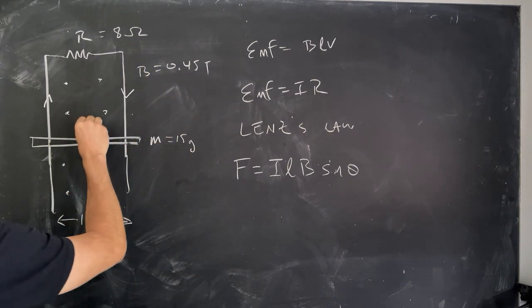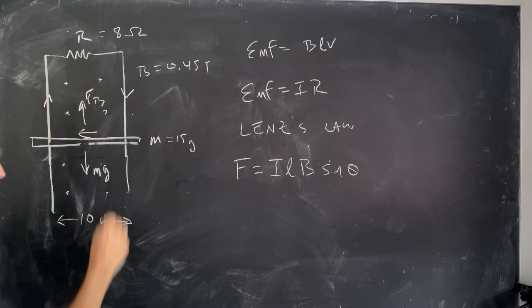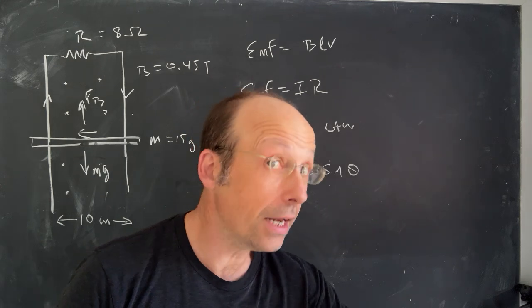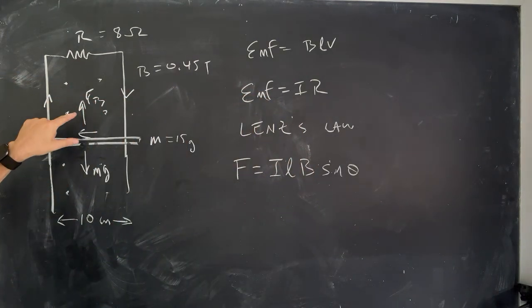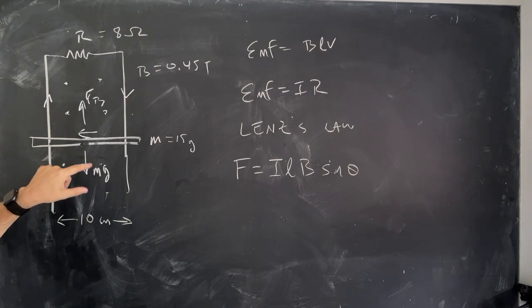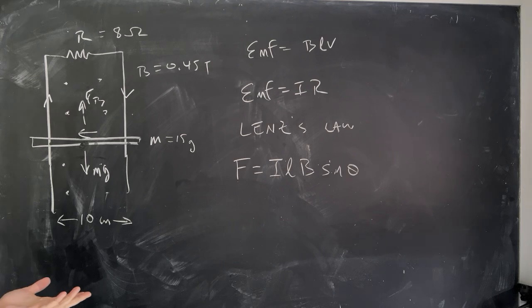So we're going to get two forces on here, FB and MG. And those two are going to be equal, and it's going to be moving at a terminal velocity. If they were not equal, if this is too small, what would happen? Well, it would increase in speed until they are the same. If this is too large, it would slow down. So it's a self-correcting system.